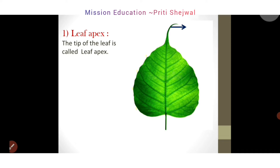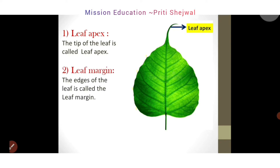The second one is leaf margin. What is leaf margin? The edge of the leaf is called the leaf margin. So the edges of the leaf are called the leaf margin.